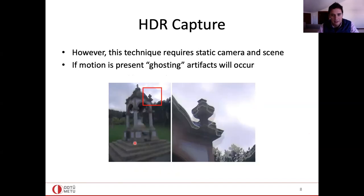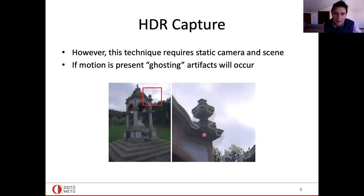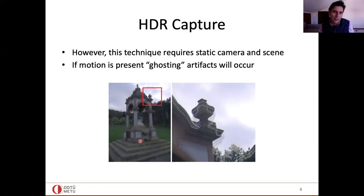The multiple exposures technique has important limitations. The scene and camera must be static. If not, we get artifacts known as ghosting. Here's a picture taken handheld — the object is static but the camera wasn't perfectly static, causing shifts between exposures. Without software processing, this creates ghosting artifacts. If there's motion in the scene it becomes even more severe, and combined with camera motion the problem gets increasingly difficult.